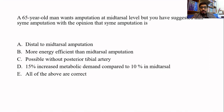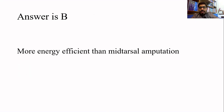The next question is also from amputations. A 65-year-old man wants amputation at mid-tarsal level but is suggested a Syme amputation instead. The examiner likes to ask about Syme amputation because it has special features. The true statement is that Syme amputation is more energy efficient than mid-tarsal amputation, even though it is proximal compared to mid-tarsal level.